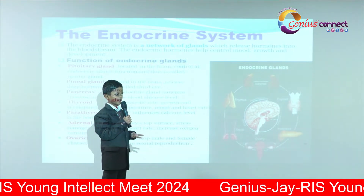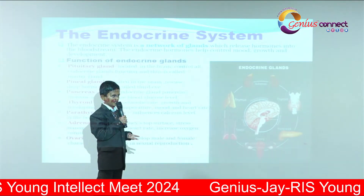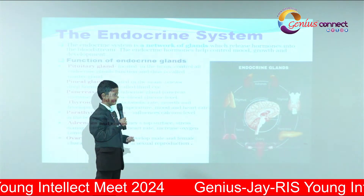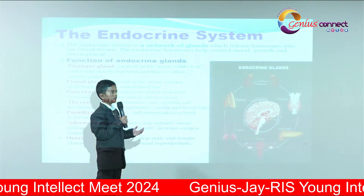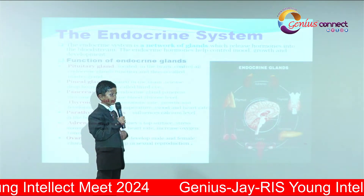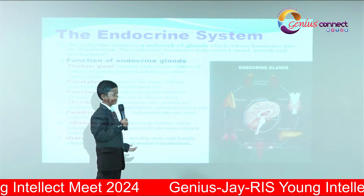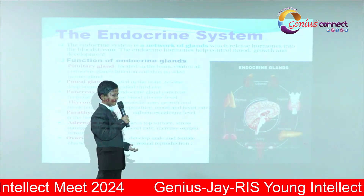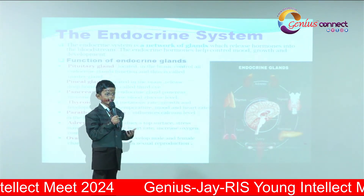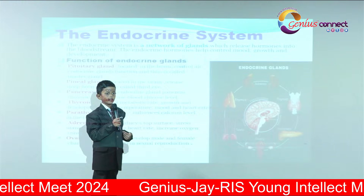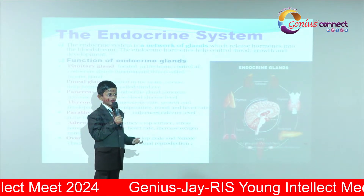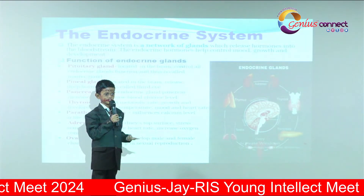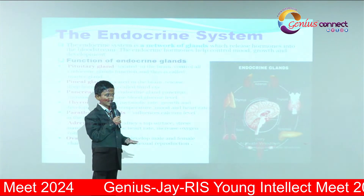The thyroid gland controls body temperature, heart rate, food processing, growth, and development. The parathyroid gland influences calcium levels in the body. The adrenal glands are located on the top surface of the kidneys and control stress management, increase oxygen consumption, and increase heart rate.